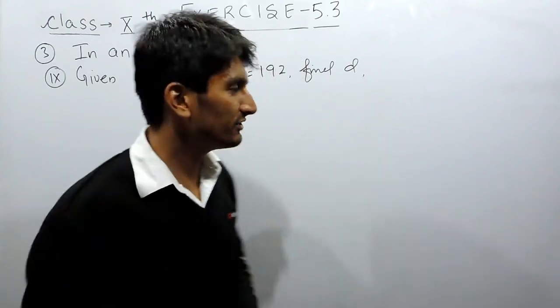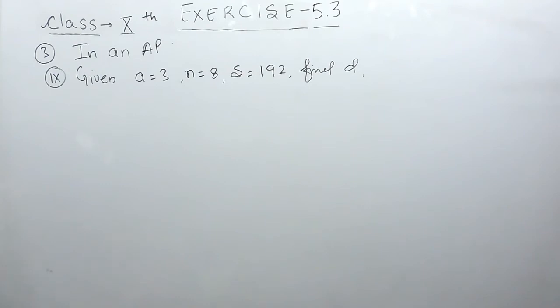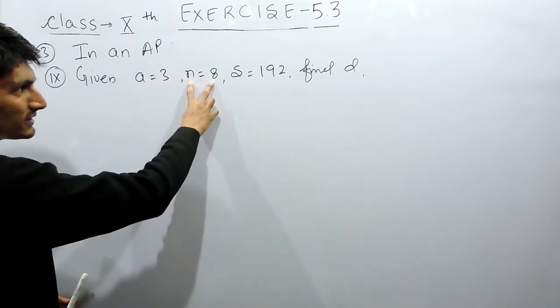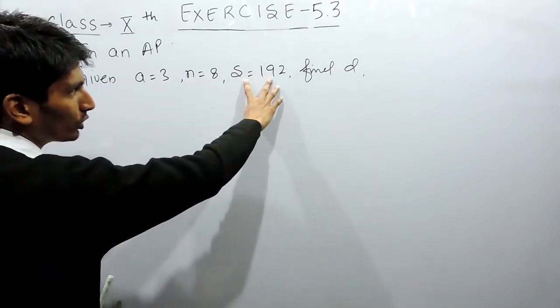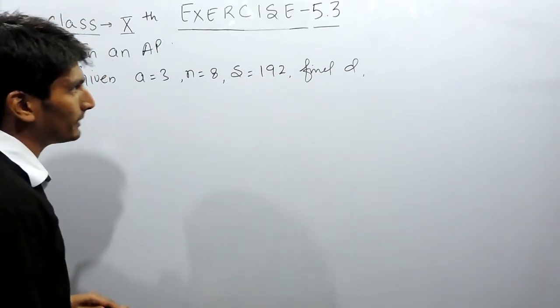Hello everyone, in this video we are going to solve part 9 of question number 3. In this, an AP is given to you whose first term is 3. There are 8 terms in this AP and the sum of those 8 terms is 192. You have to find the common difference in this AP.